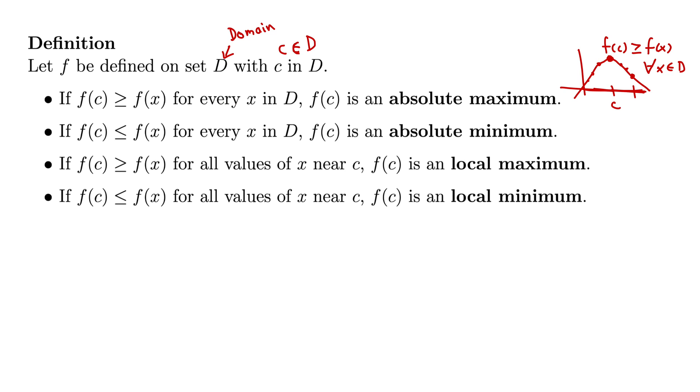Okay, on to the next definition here. It's very similar. If F of C is less than or equal to F of X for every X in the domain, or in D, then F of C is an absolute minimum. And again, if you like the mathematical notation, for all X in D. More compact way of writing that. But same idea. If it's the smallest point, it must be a minimum.